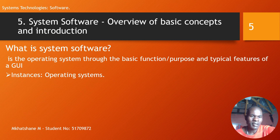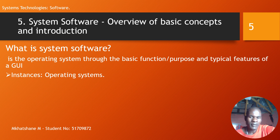Let's check system software. What is system software? It is the operating system through the basic function. All papers end up or typical features of a GUI. For instance, operating systems.